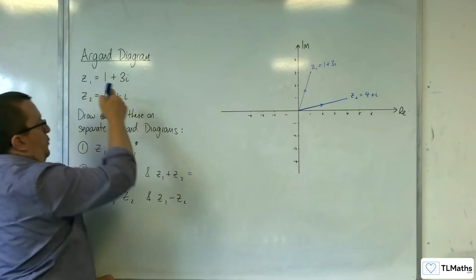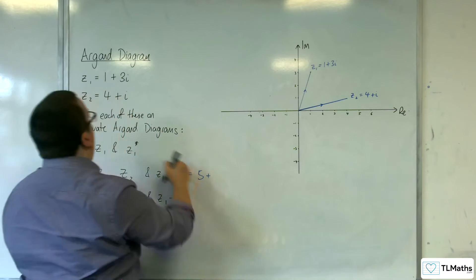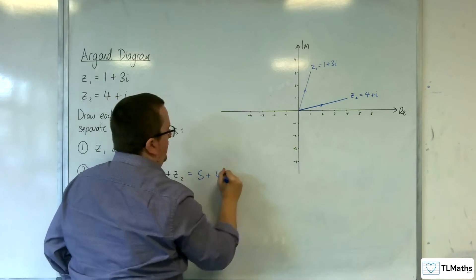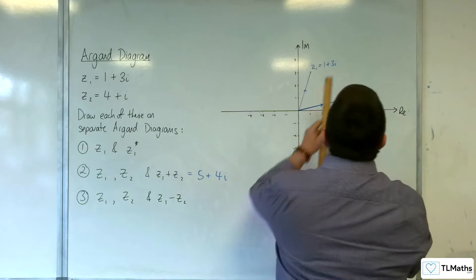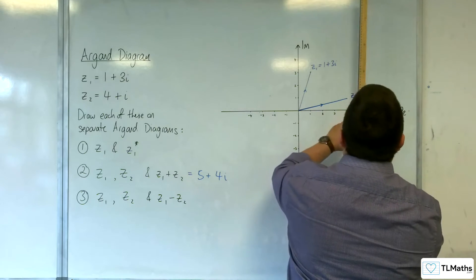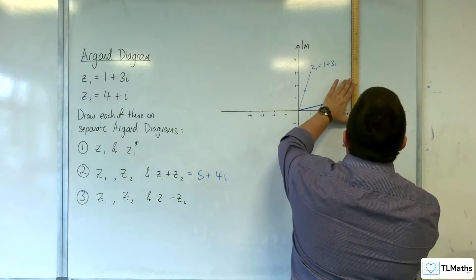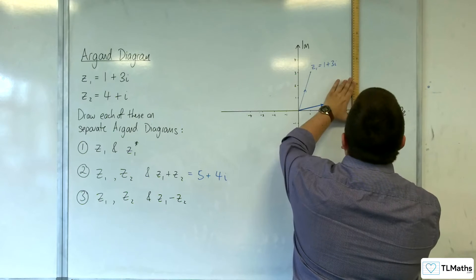We'd have 1 plus 4, so 5. And 3i plus i is 4i. So, 5 plus 4i. So, 5 long and 4 up. Right, let's see what that would be.